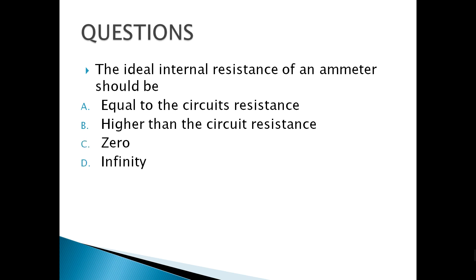The ideal internal resistance of an ammeter should be zero. Ideally zero, and practically it should be very small.